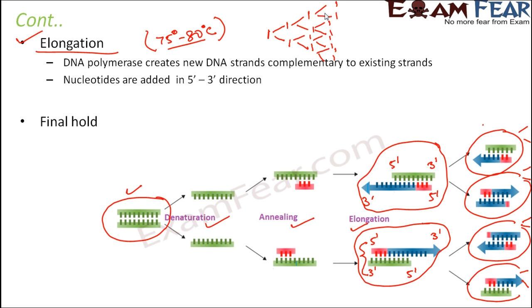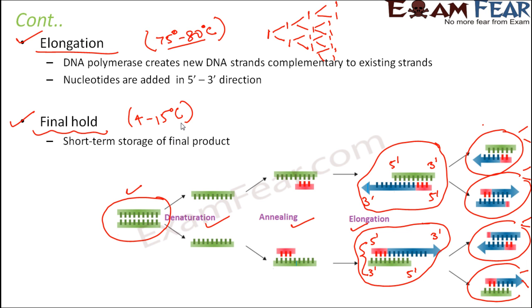After elongation comes the final step, called the final hold. At final hold, the temperature is considerably lowered to somewhere around 4 to 15 degrees Celsius. At this temperature, it functions as a short-term storage of the final product — whatever number of copies of DNA have been formed. If we want to check the PCR product being generated, gel electrophoresis can be performed to visualize and check for the sizes of the DNA copies formed as a result of PCR.